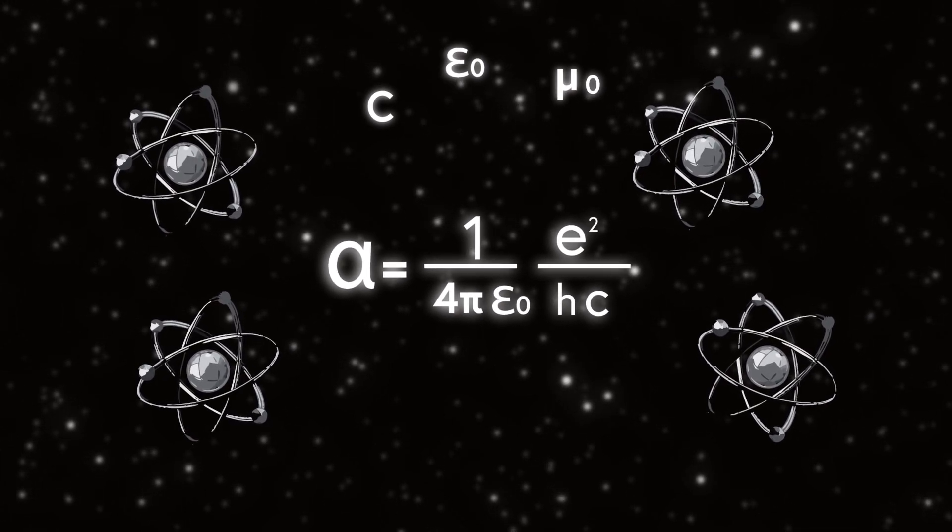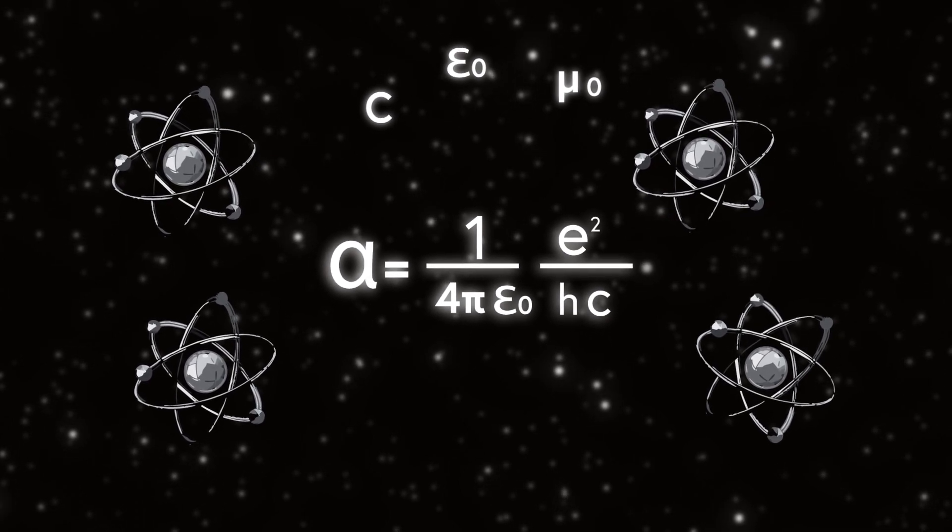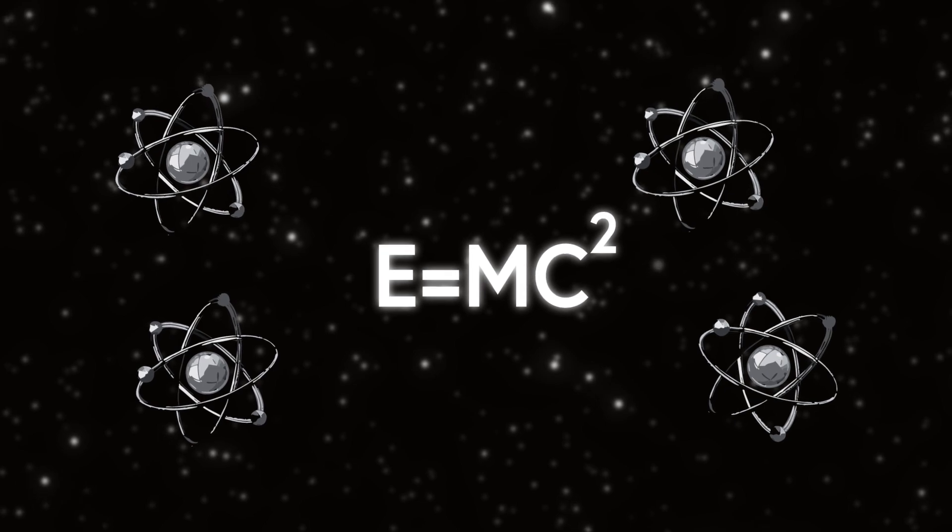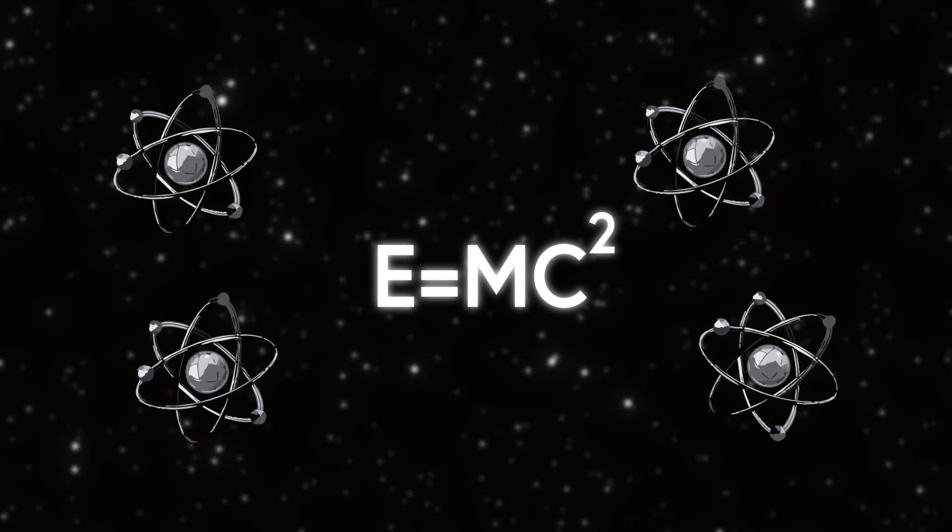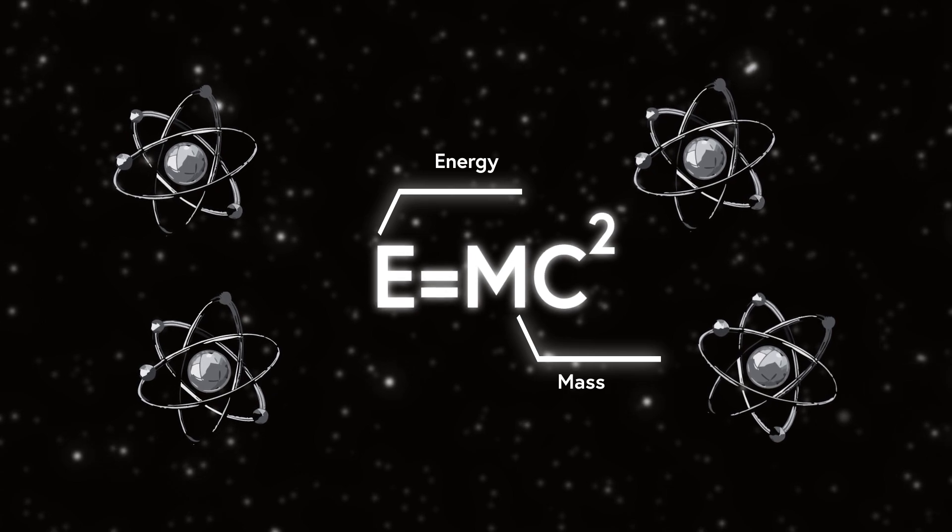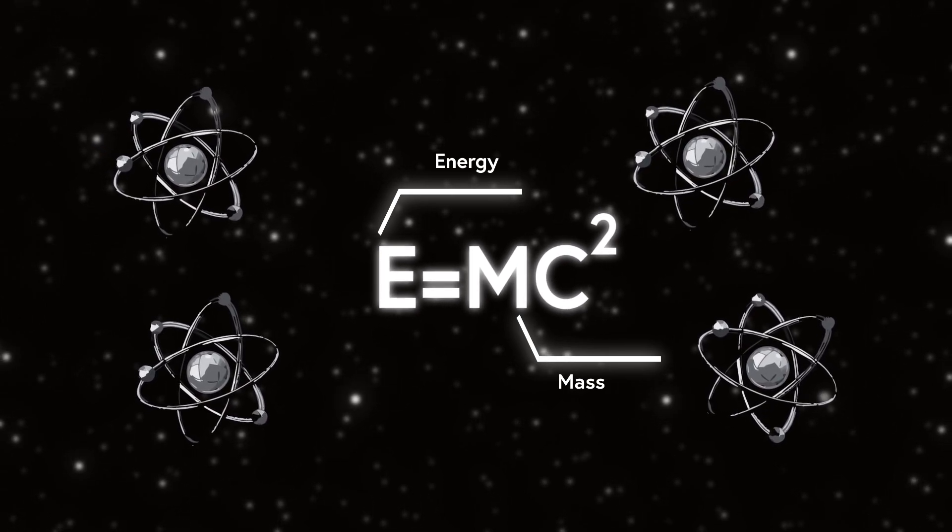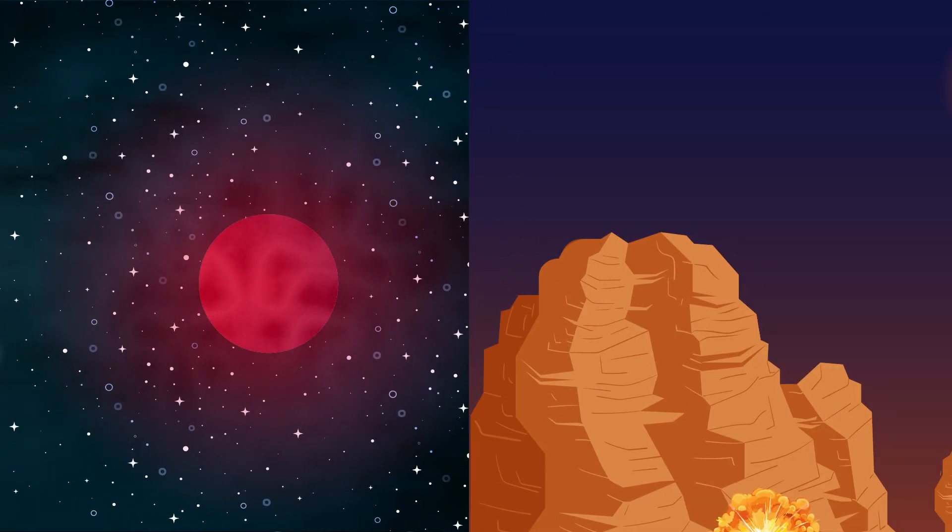Furthermore, C appears in many critical equations, including Einstein's E equals MC squared, which describes the energy stored in matter. A different speed of light could drastically alter energy conversion processes, possibly affecting how stars shine or how nuclear weapons unfold.